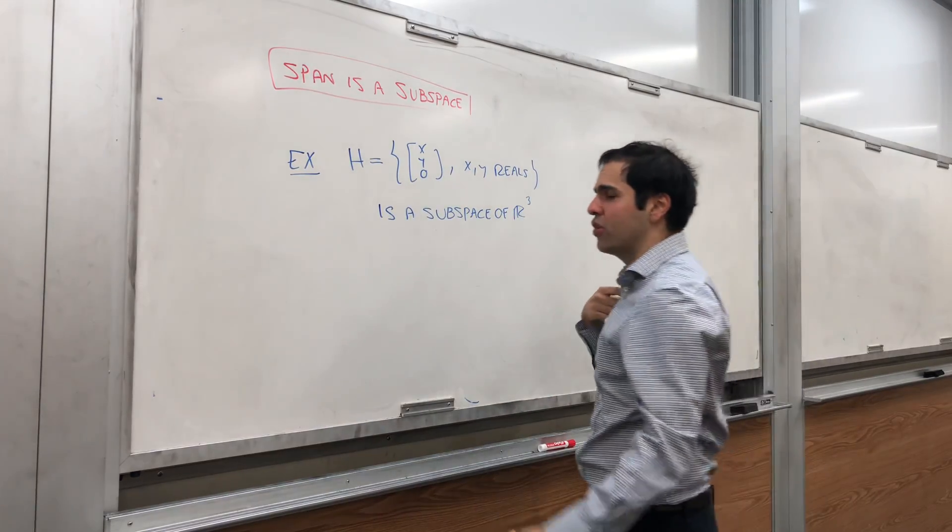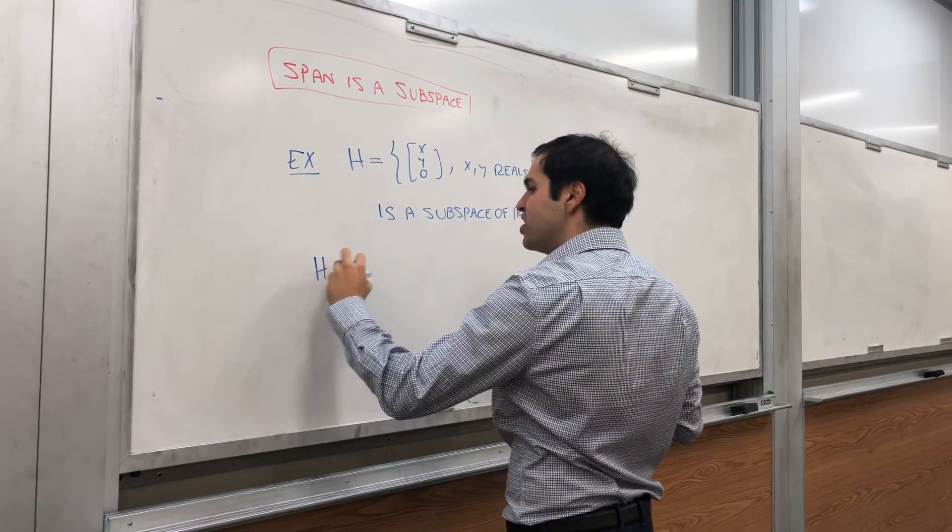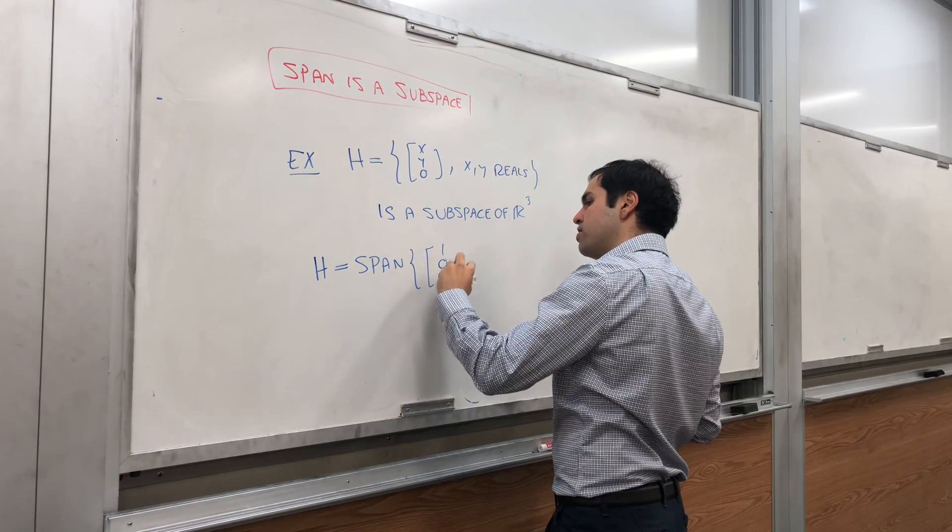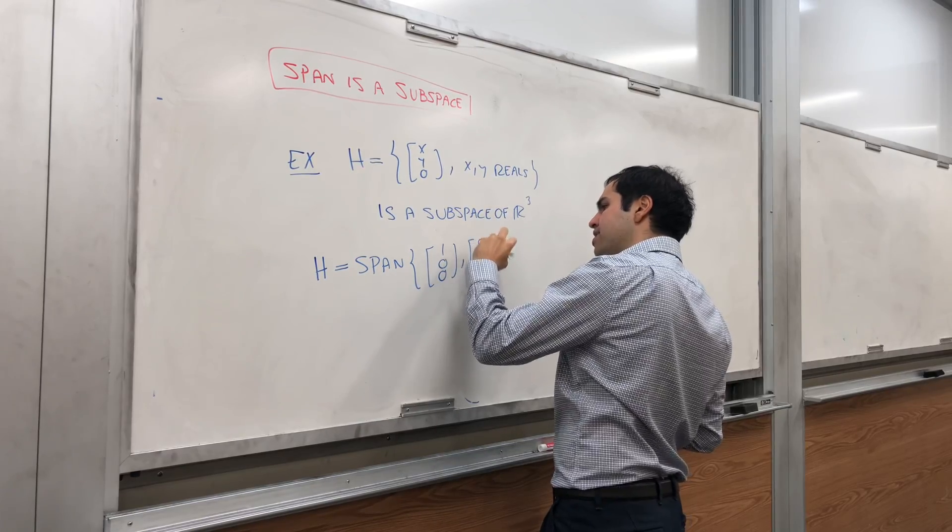And why? Well, now there's an easier way of showing this because h is simply the span of just the vectors 1,0,0, and 0,1,0.